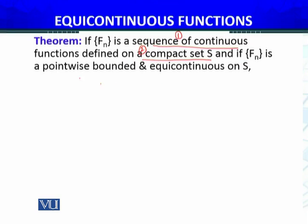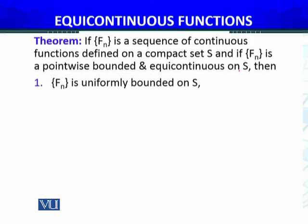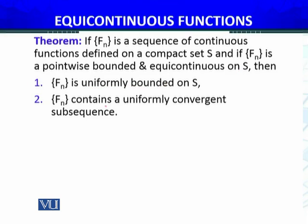The conditions are: fn is a continuous function, defined on a compact set S, fn is pointwise bounded, and fn is equi-continuous on S. From these, we can conclude: first, that fn is uniformly bounded; second, that fn contains a uniformly convergent subsequence.